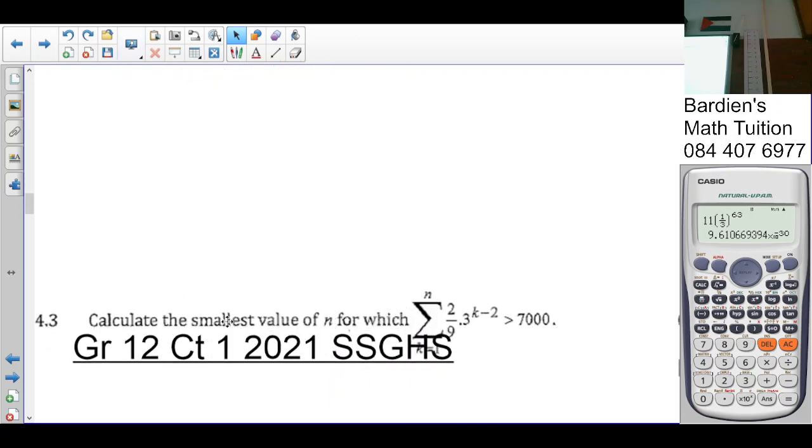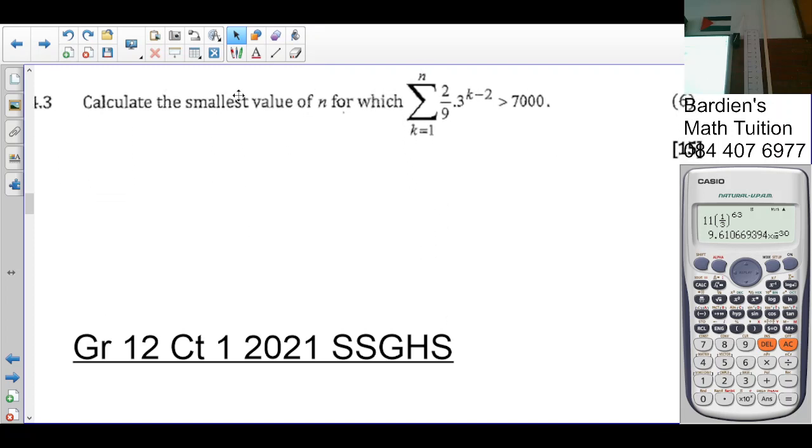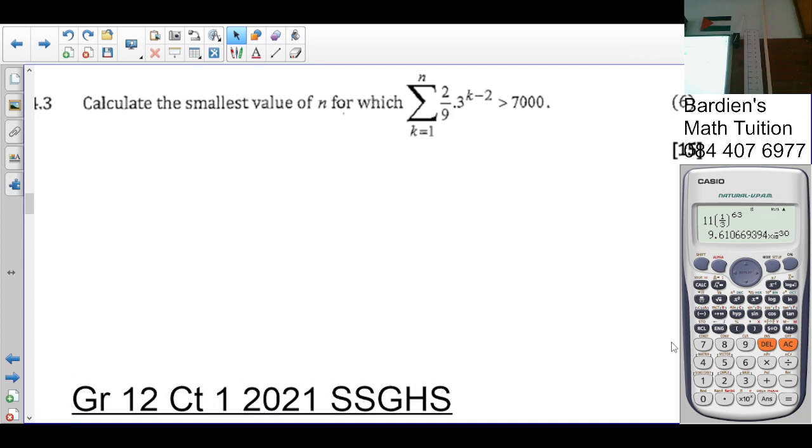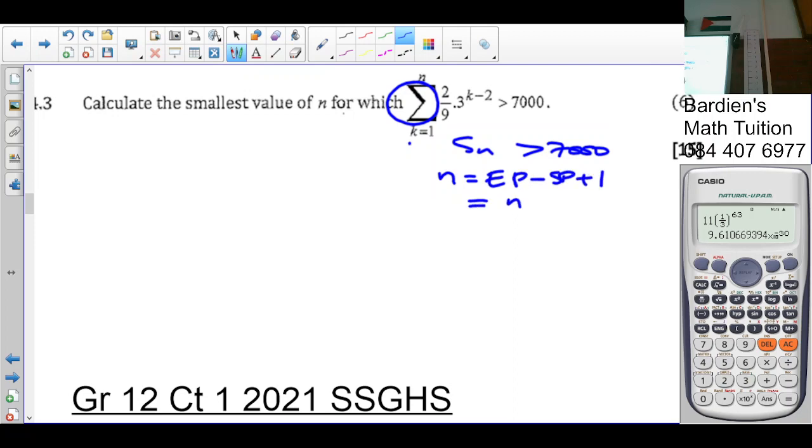In the next question, in the 4.3, the question says, calculate the smallest value for N for which sigma. Now, what does sigma stand for? The sum of. So in other words, the sum of has to be greater than 7,000. People, where do we start? We start with the first three terms. So we start with k is equal to 1. How many terms are here? The ending point minus the starting point plus 1. The ending point is N minus 1 plus 1, it's going to give you N. So the number of terms is basically N in this case.